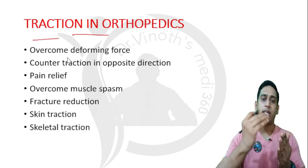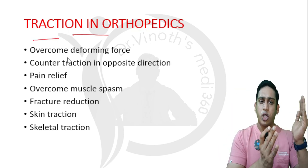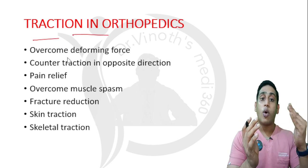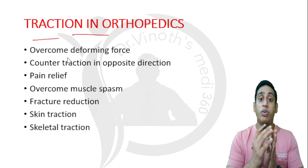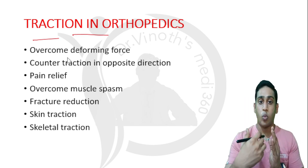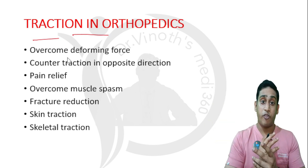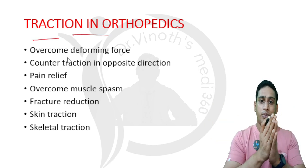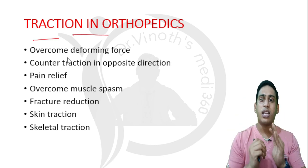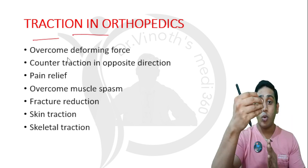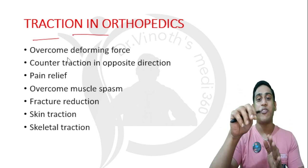The other part — assume that the distal segment will be acting as a unit under the influence of one more agonistic muscle. Now the antagonistic muscles will be very weak; they cannot overcome the deforming force. So to overcome it externally, we have to give a traction — we are giving an external force to counteract the force acting inherently at the fracture area.